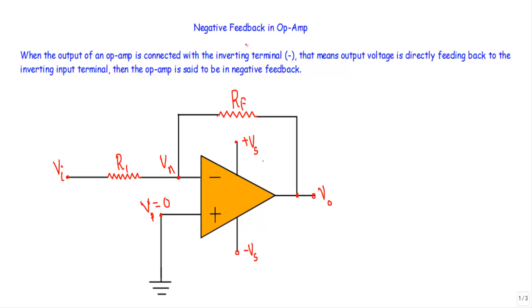There are two kinds of feedback in an op-amp circuit. One is positive feedback, and another is negative feedback.